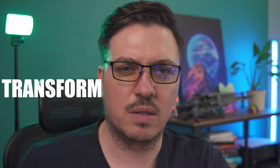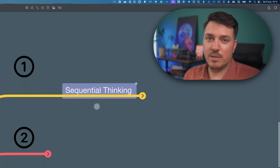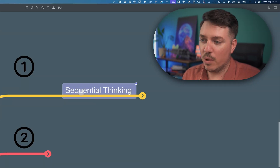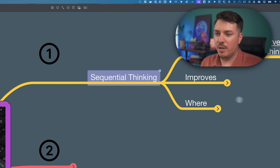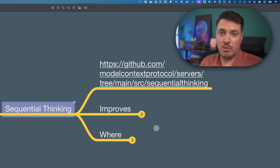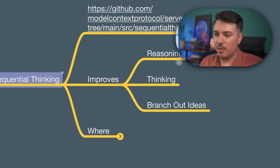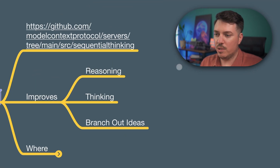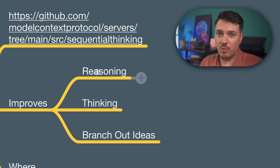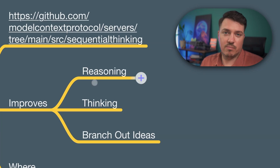Let's dive in and transform the way you work with code. The first one is sequential thinking — pretty common, I guess. This gives your copilot agent a few improvements. Reasoning is really improved because of how this works, basically.